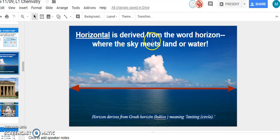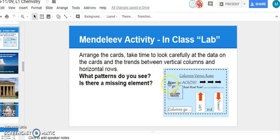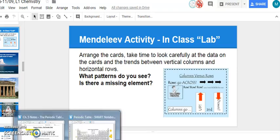Horizontal is derived from the word horizon, where the sky meets land or water. It actually comes from the Greek word horizon, or kouklos, meaning limiting circle. And then vertical columns support buildings. Vertical is derived from the Latin word verticalus, from vertex meaning the crown of a head. And another fun way to remember is that rows go across. You have to row, row, row across the row, and columns go up and go down. So just make sure you keep those separate in your head.